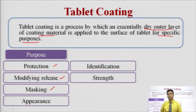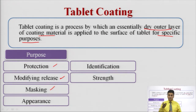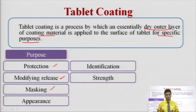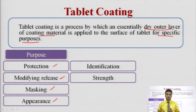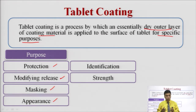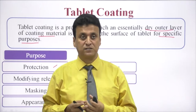Then we have masking — masking the taste and masking the odor. Agar humari drug bitter taste hai ya uske odor mein koi issue hai, we can mask the taste and odor by applying coating on the tablet surface. Then we have appearance. Sometimes coating gives a very good appearance to the tablet — for example, sugar coating ke baad jo tablets aati hai, they are very colourful, shiny and glossy.